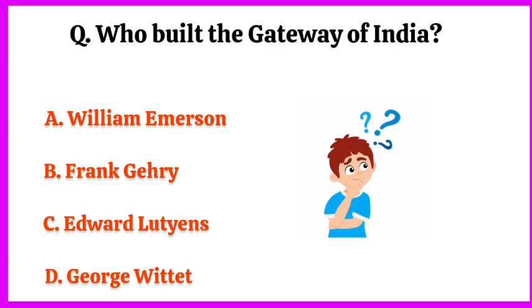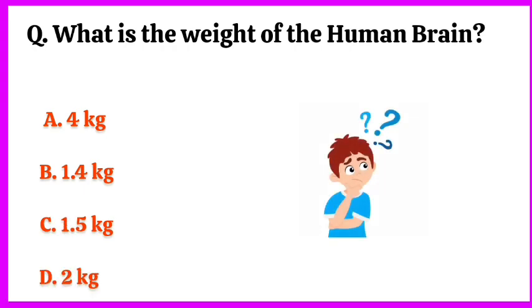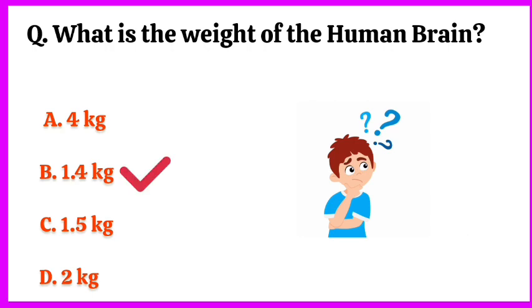The correct answer is option D: George Wittet. What is the weight of the human brain? The correct answer is option B: 1.4 kilograms.